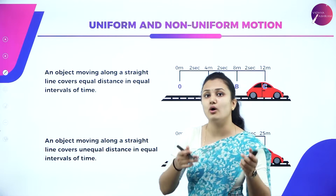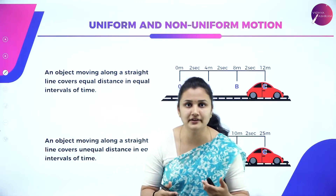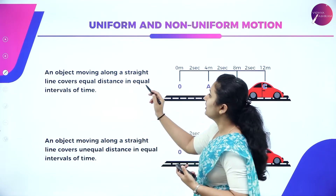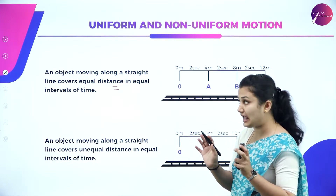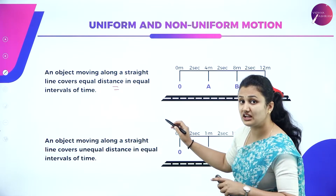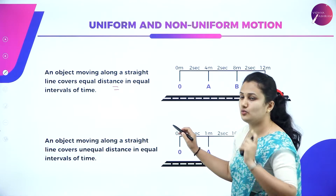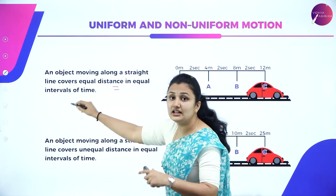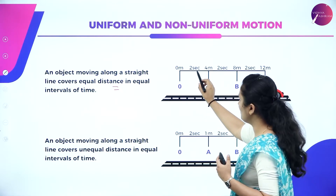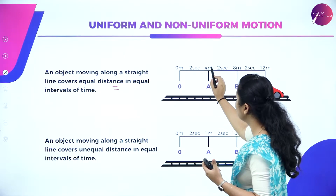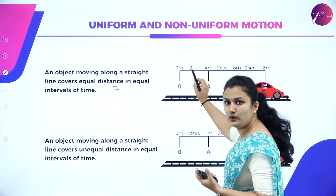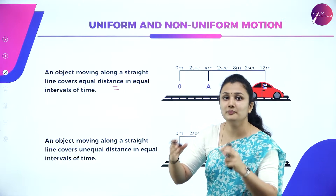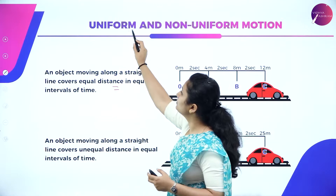Uniform motion means an object moving along a straight line covers equal distance in equal intervals of time. For example, a car covering 4 meters every 2 seconds — from 0 to 4, 8, 12 meters — is uniform motion. Equal interval of time, equal distance covered: that is uniform motion.